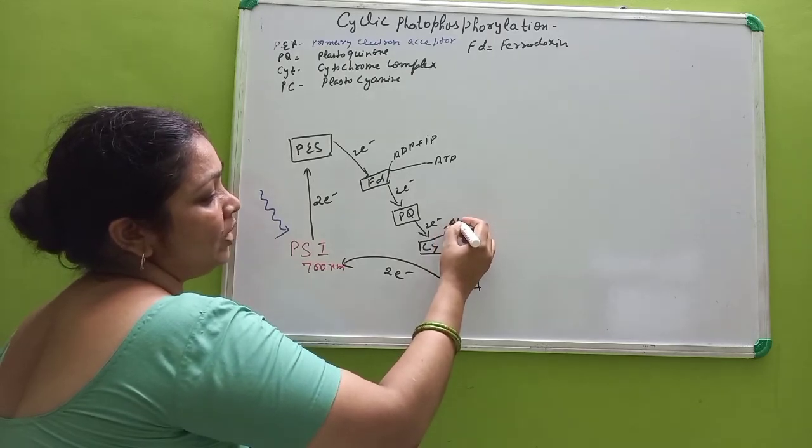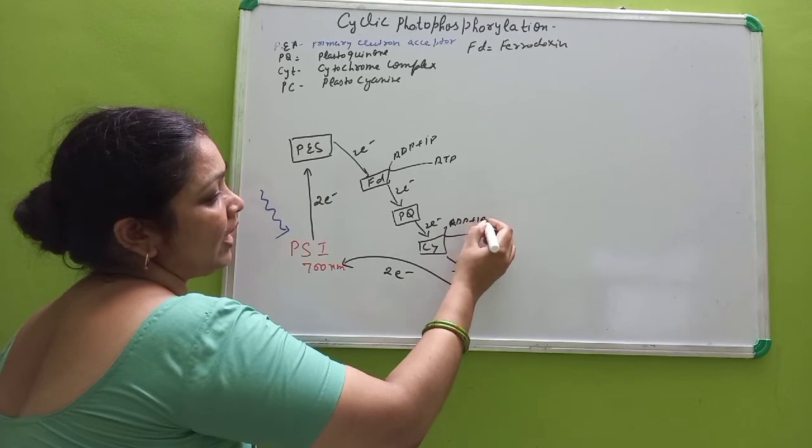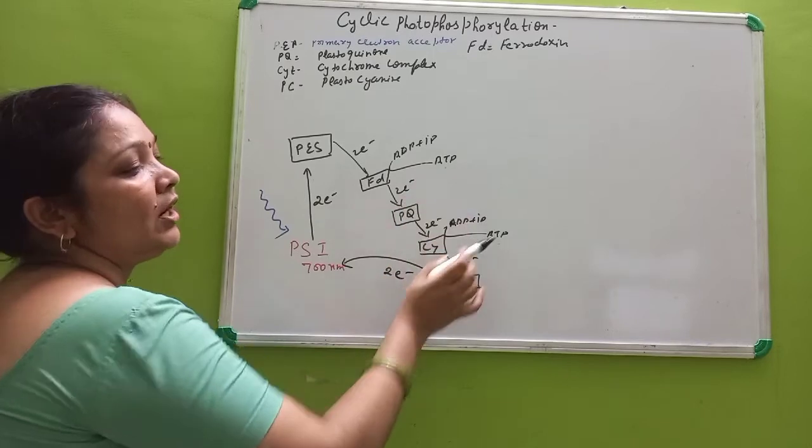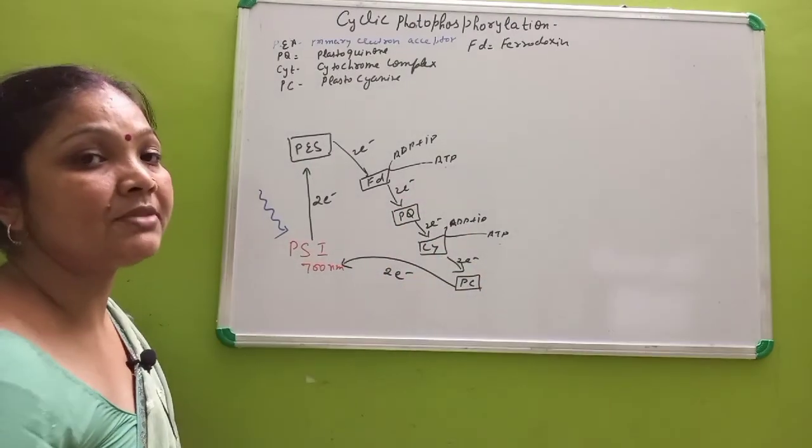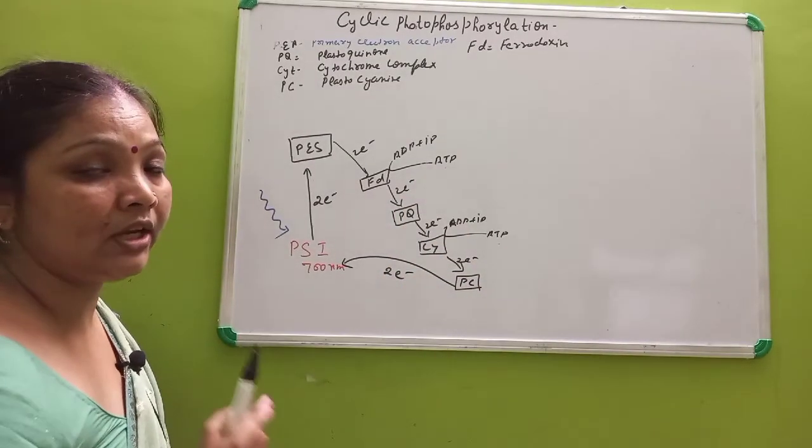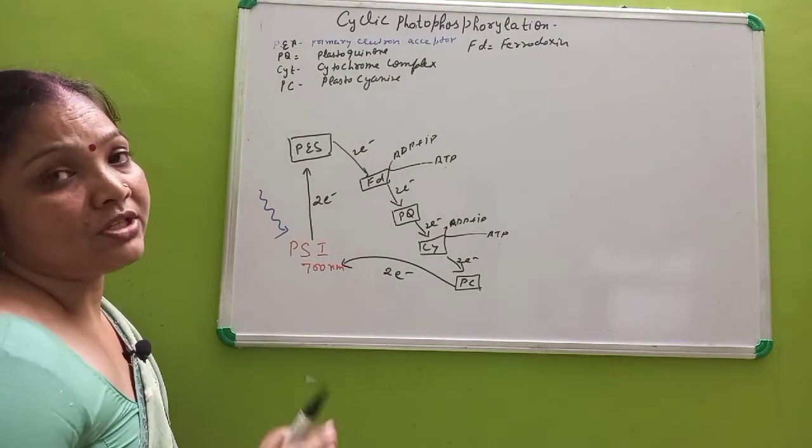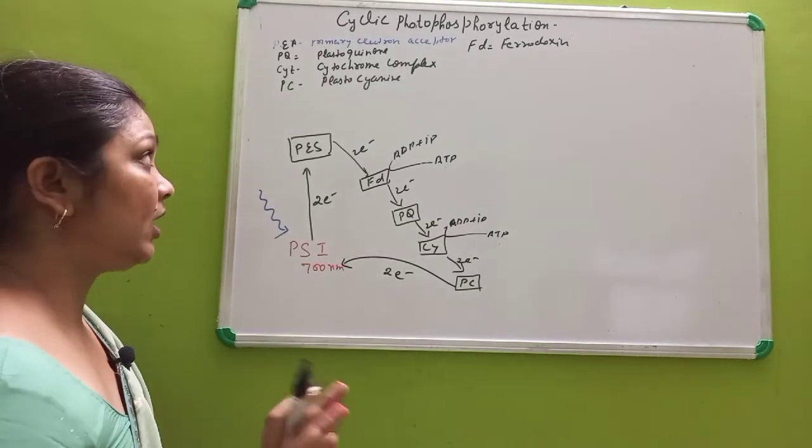And again when there is cytochrome, then also ADP combines with inorganic phosphate and forms ATP. So two places are there where ATP formation is taking place, but there is no formation of NADPH2 that acts as a reducing substance in dark reaction.